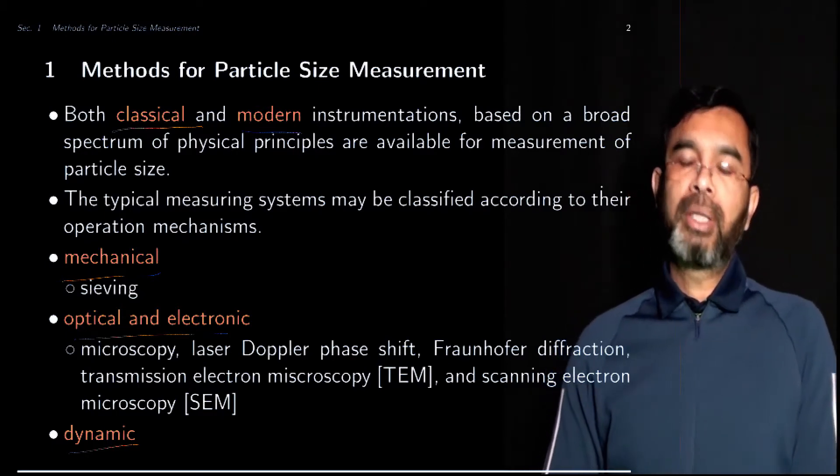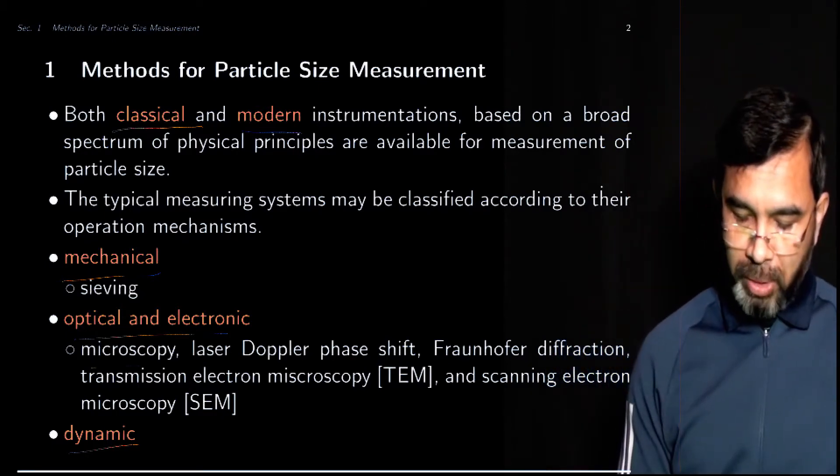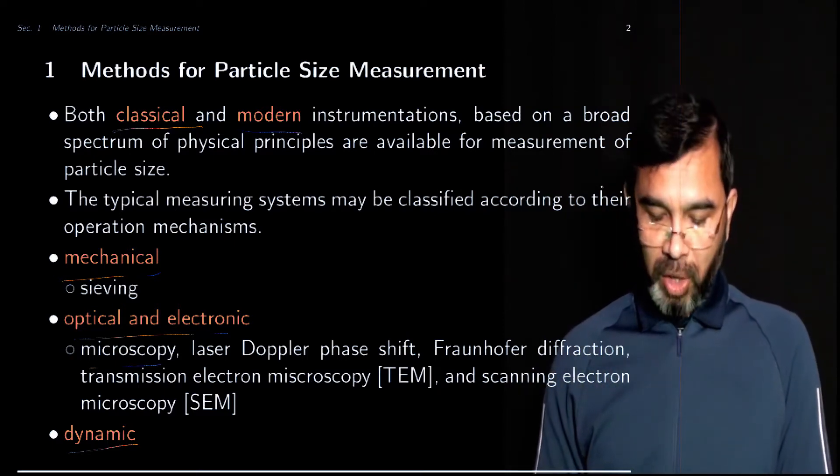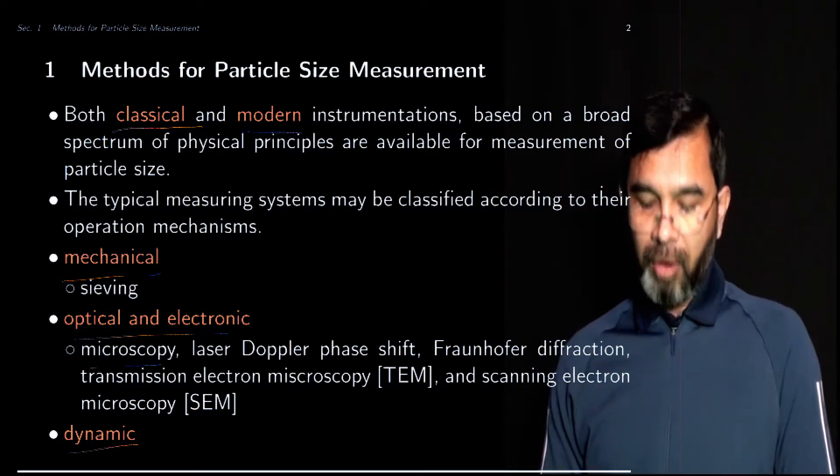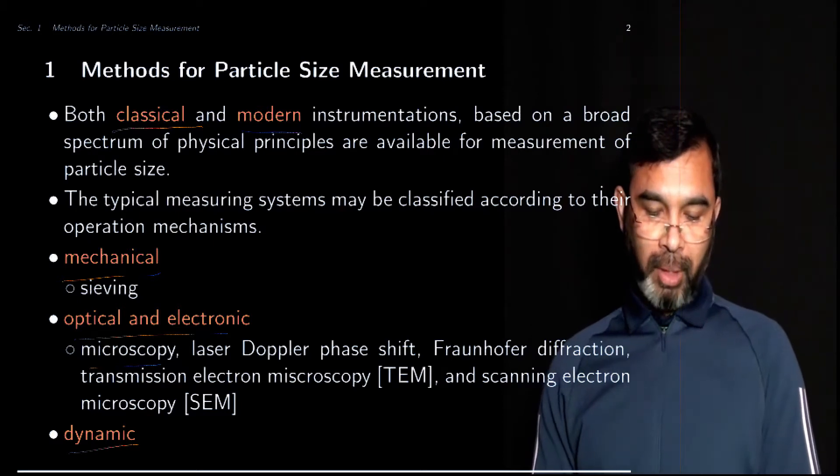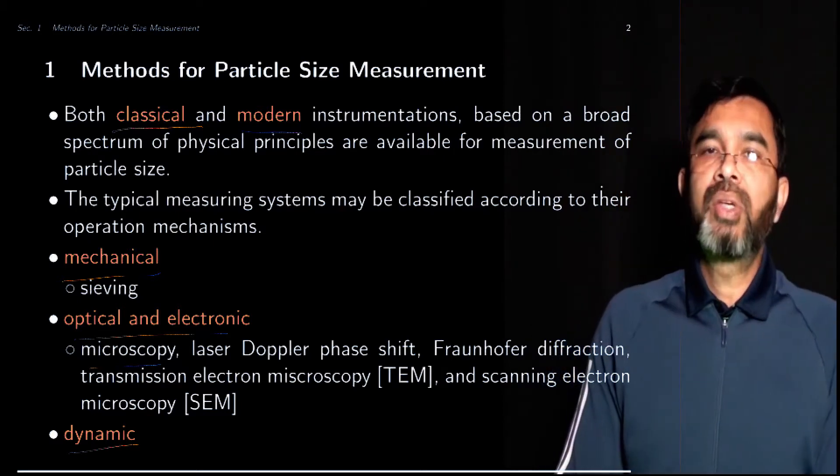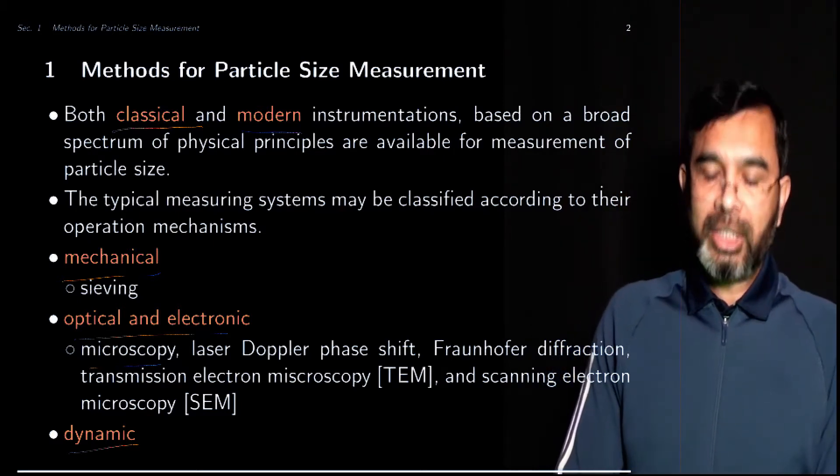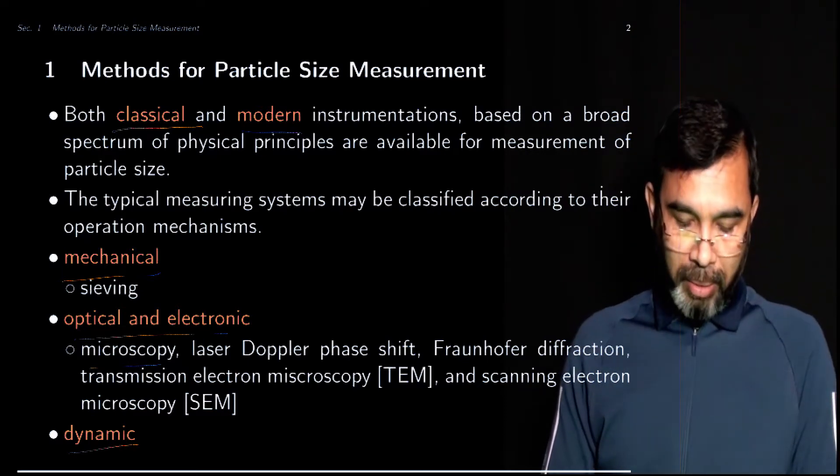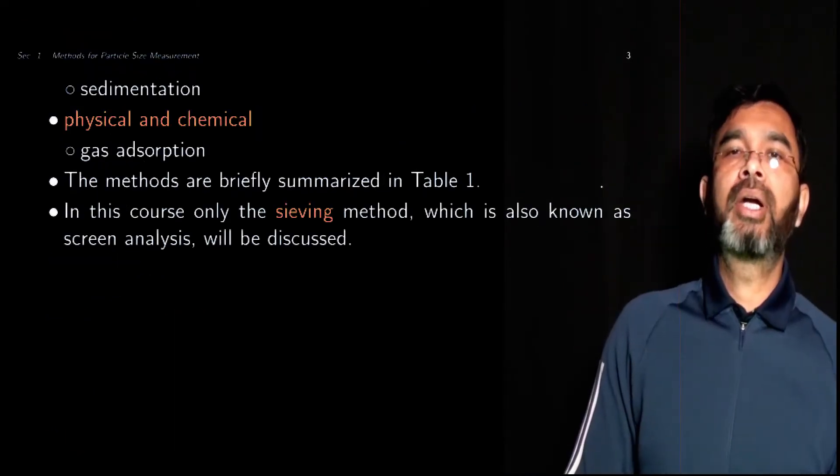Among the optical methods there are different options: microscopy, laser Doppler, Fraunhofer diffraction. These all use the optical and electronic properties of the materials. In the process industry there are different dynamic methods,